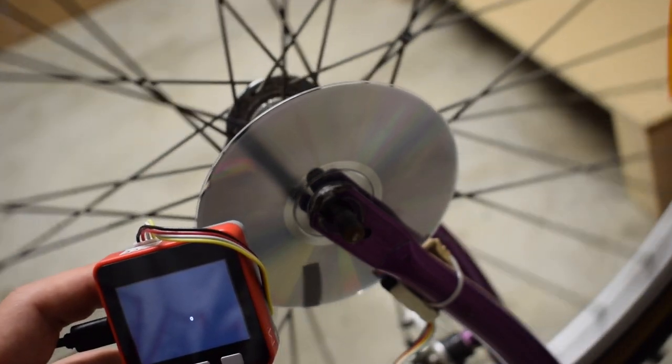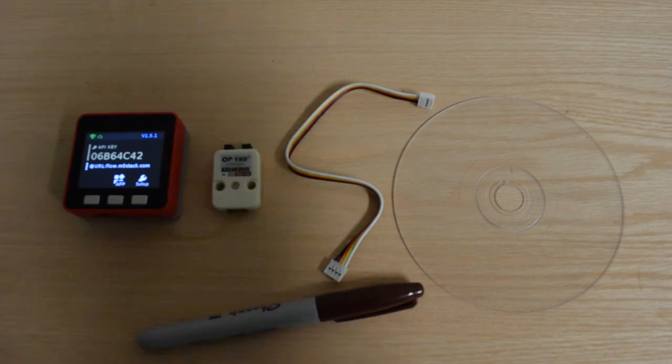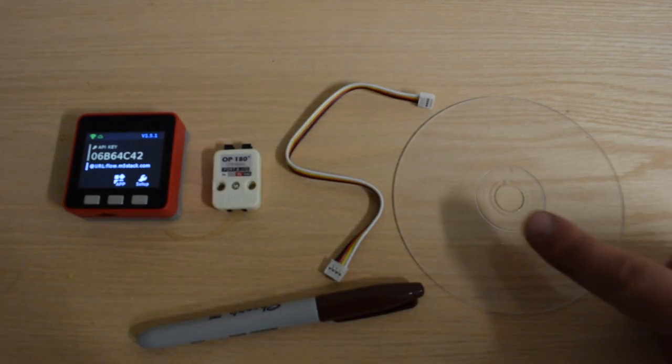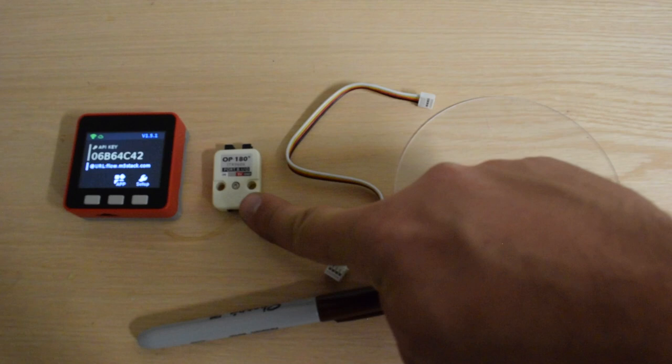So what are we going to need to make this project on our bicycle? Firstly we'll need a disc. I found this one in a pack of old CDs. The OP180 or OP90 sensor depending on at which angle you're going to mount your sensor.